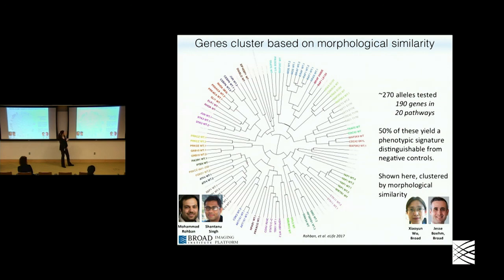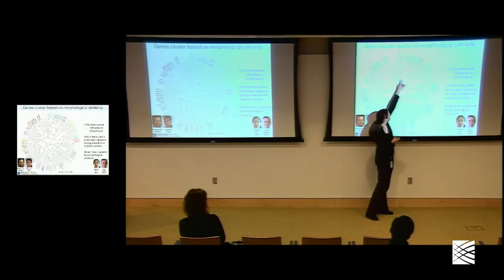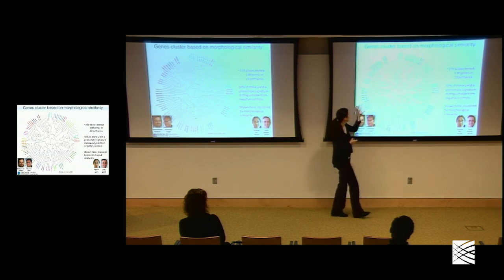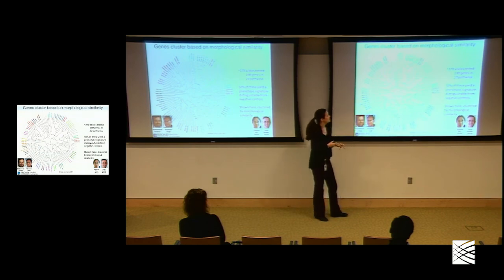In this experiment we have about a hundred genes — mostly cancer-related, chosen from the cancer program to represent different pathways. What we find is that the cell painting assay has sufficient information to group different genes based on their pathways. For example, the HIPPO pathway clusters here, and we have BRAF alleles and wild types grouping there, with a number of other examples of genes clustering based on their phenotypic similarity.